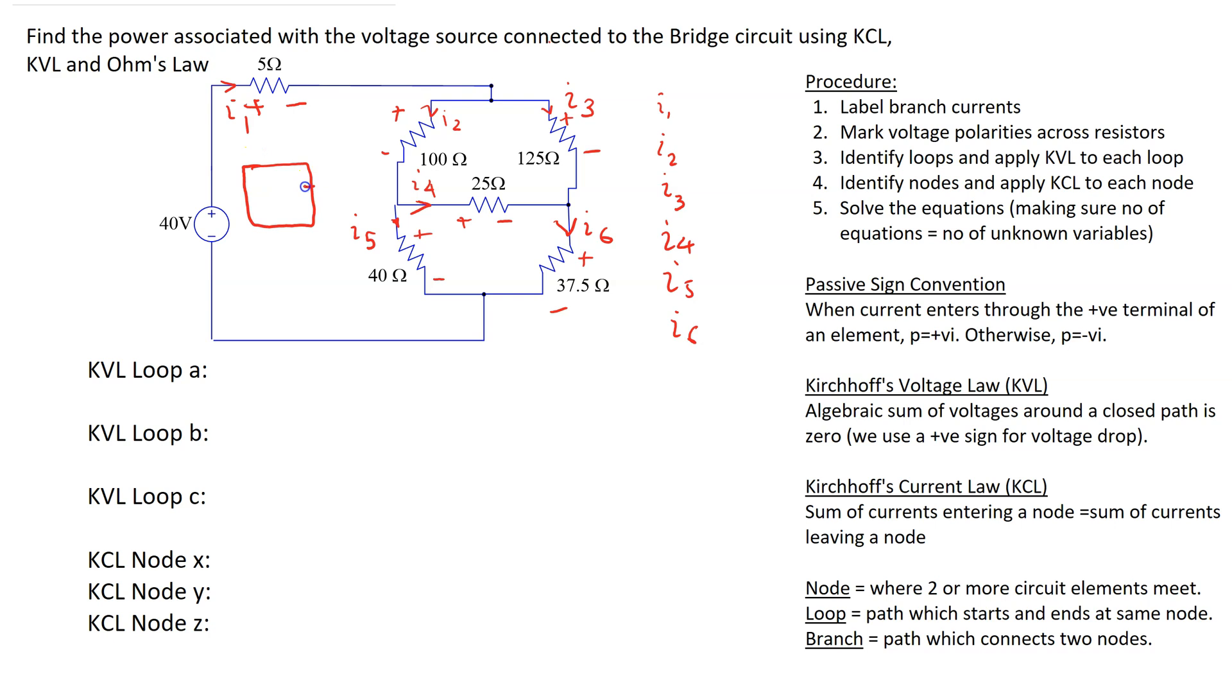We can also define another loop here, loop B, and then a third loop here, loop C. Recall that a loop is a path which starts and ends at the same node. We can identify the following nodes: this is the same node, node X. These two points are the same node. We can identify this as node Y and this as node Z. Now the problem setup is complete.